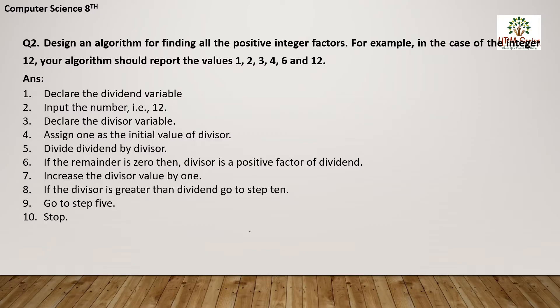First, we declare the dividend variable. The dividend variable can be x, y, or z. Input the number — let the number be 12. So 12 will be saved in the dividend variable, whichever name you have assigned: x, y, or z. Step number 3 is declare the divisors variable.